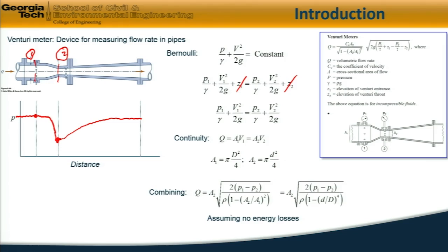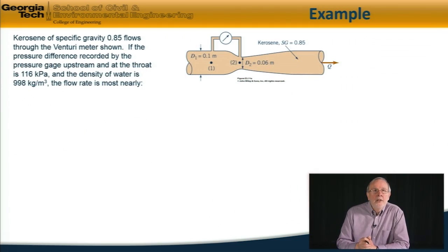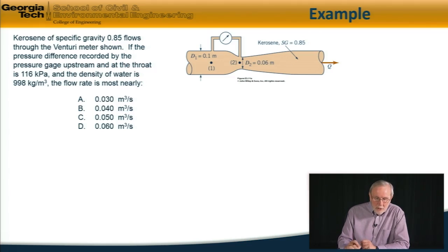Now, this equation assumes no energy losses. So let me do an example on that. In this question, we have kerosene of specific gravity 0.85 flowing. We're given the pressure difference measured on the pressure gauge is 116 kilopascals. The density of water is given. The flow rate is most nearly which of these alternatives.